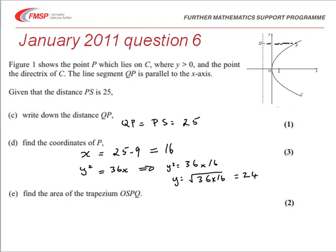We're told that y is positive, so we just need to take the value plus 24. And therefore the coordinates of P are 16, 24.